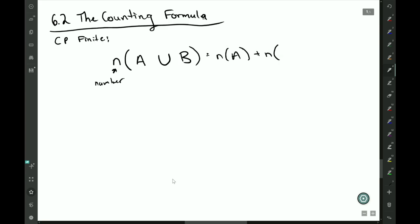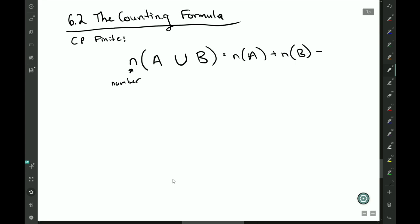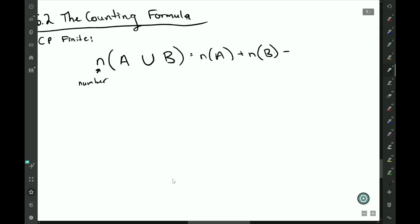Plus the number of things in B minus what they share: the number of things in A intersect B. Verbally written out again, this means the things in A plus the things in B minus the things they share. Things in A plus the things in B minus what they share.